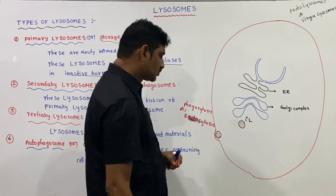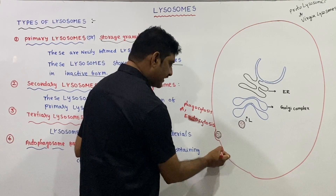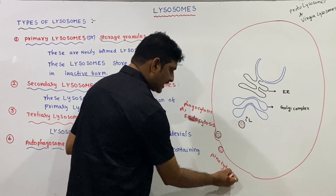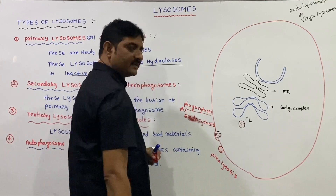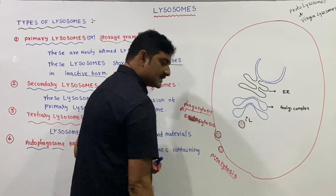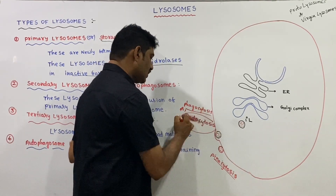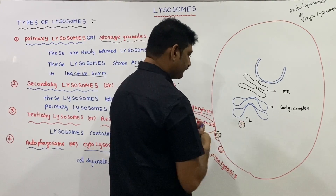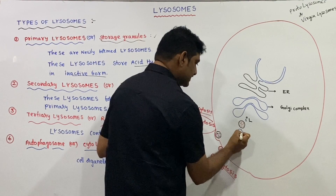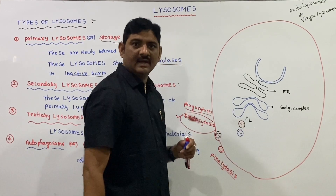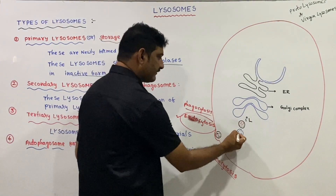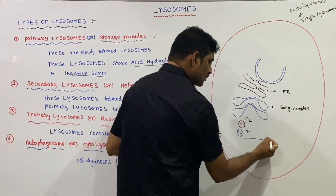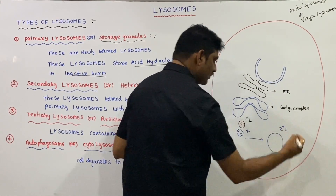Solid food is taken in by phagocytosis — the vesicle formed is called a phagosome. Liquid food is taken in by pinocytosis, which is cell drinking, while phagocytosis means cell eating. The phagosome fuses with the primary lysosome to form the secondary lysosome.